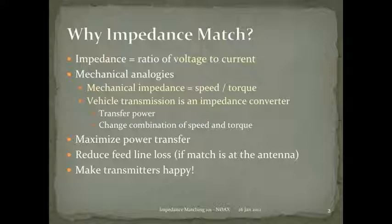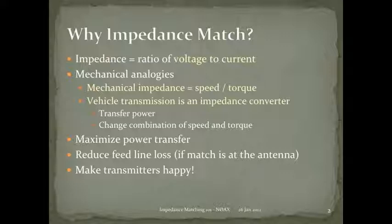Your vehicle transmission is really an impedance converter — an impedance matching device. Your engine wants to run at 2,000 to 3,000 RPM, the peak of its efficiency and torque curve, but your wheels can't run at that speed all the time. First, second, third, fourth gear — the gear train changes speed and torque from one combination to another, and that's a change of mechanical impedance.